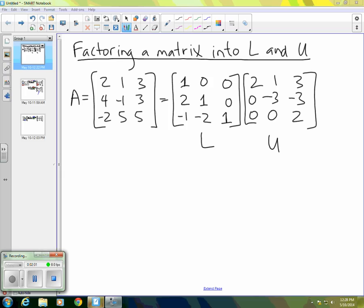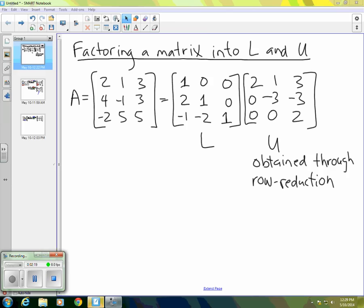So we know how to get U. U is obtained through row reduction. And it turns out that for L, the diagonal will always be ones. And then the only question is, where do the other three entries come from? The other three entries actually show up in the process of row reducing A. So all we have to do is pay careful attention when we're doing that row reduction, and we can see where those values come from. Let's go back and take a look at our row reduction.